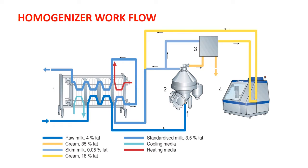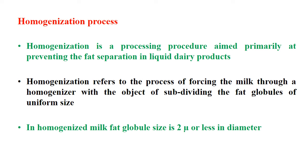Here we can see the workflow in a homogenizer for making homogenized milk. From the left side arrow, there is the entry of raw milk. Then it goes to the cream separator. From there, the cream goes to the store, and then the cream goes to the homogenizer. There is also mixing of other skim milk. Then a standardized milk is prepared, which then gets pasteurized and goes out as standardized homogenized milk, with fat uniformly distributed.